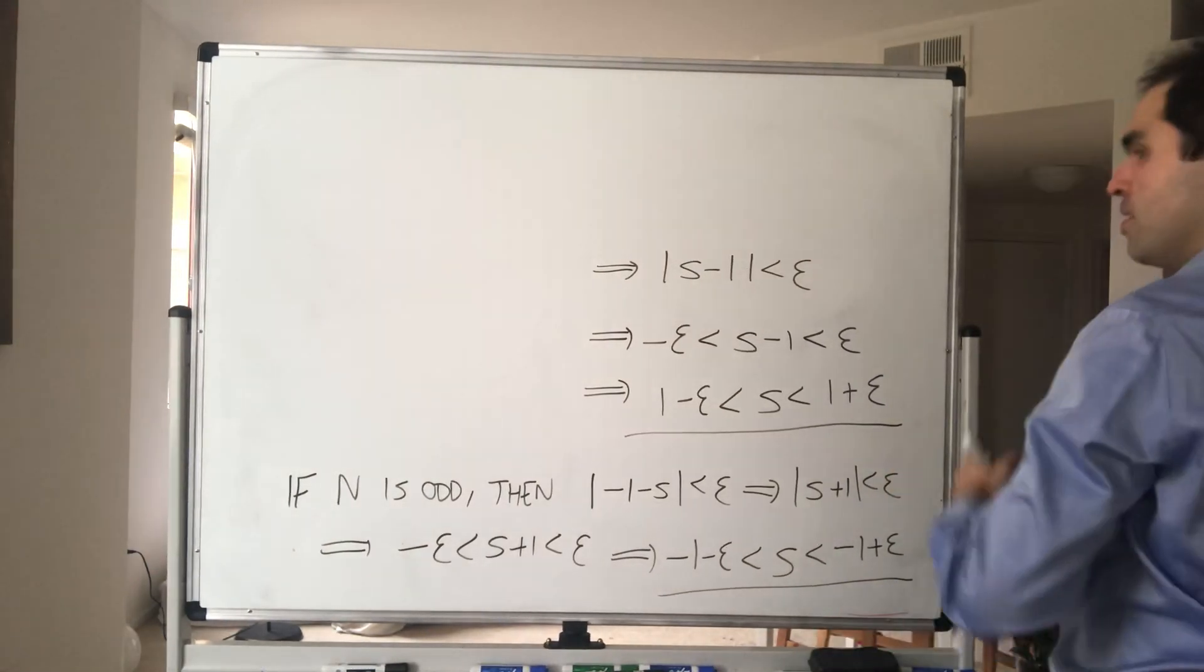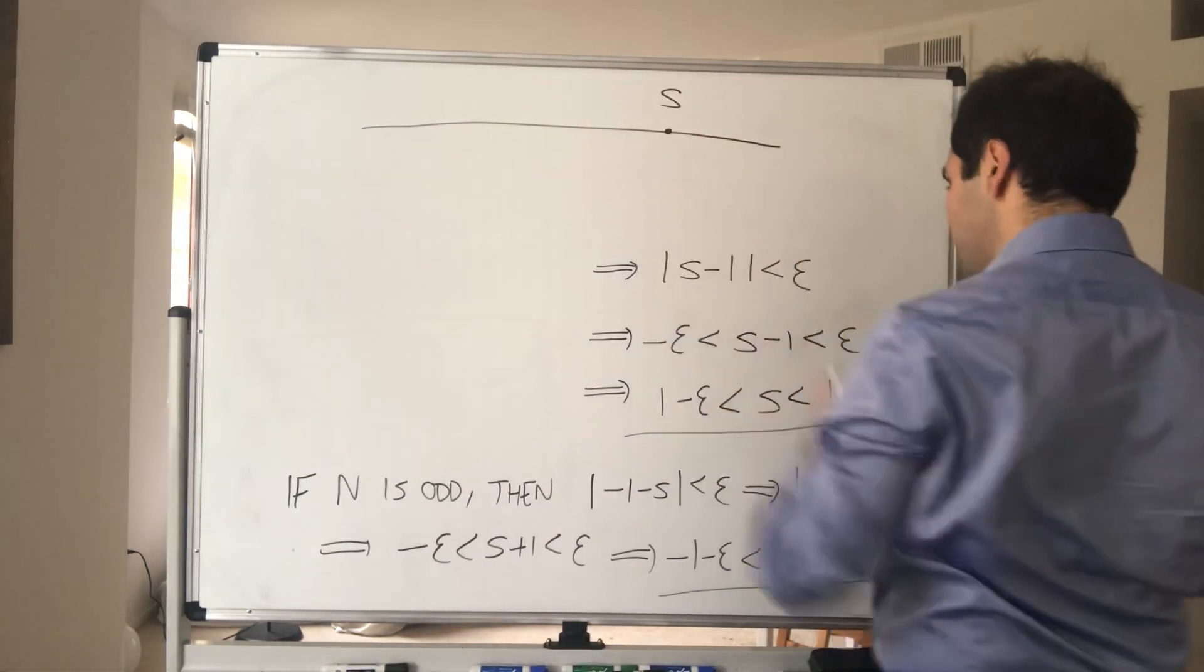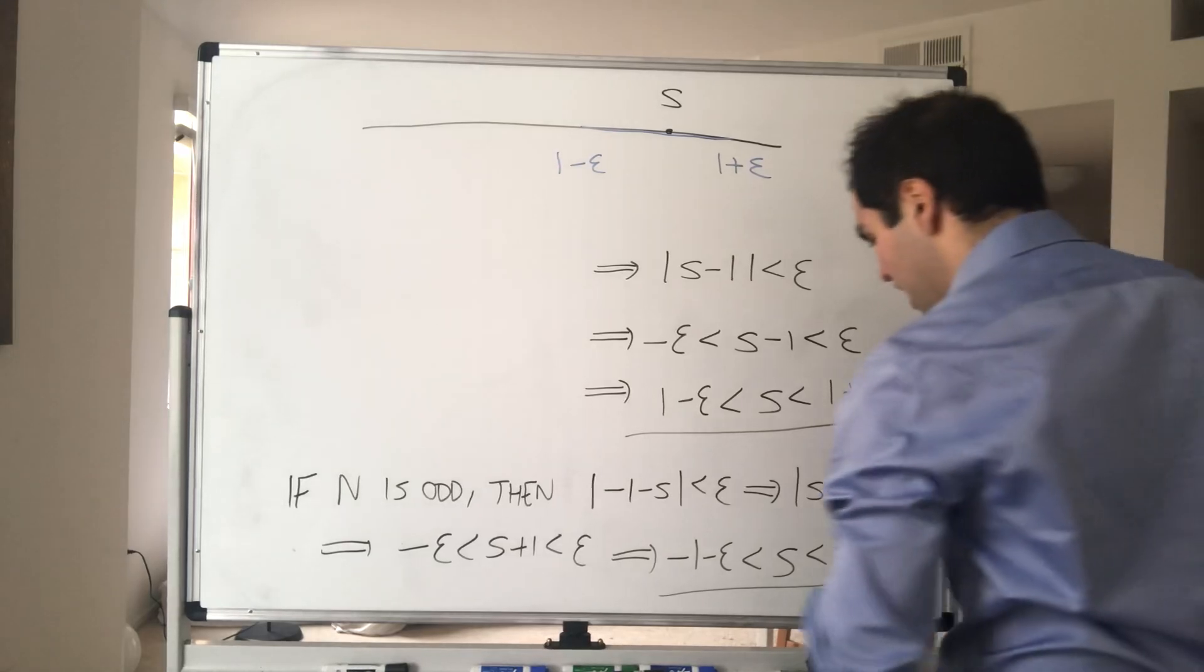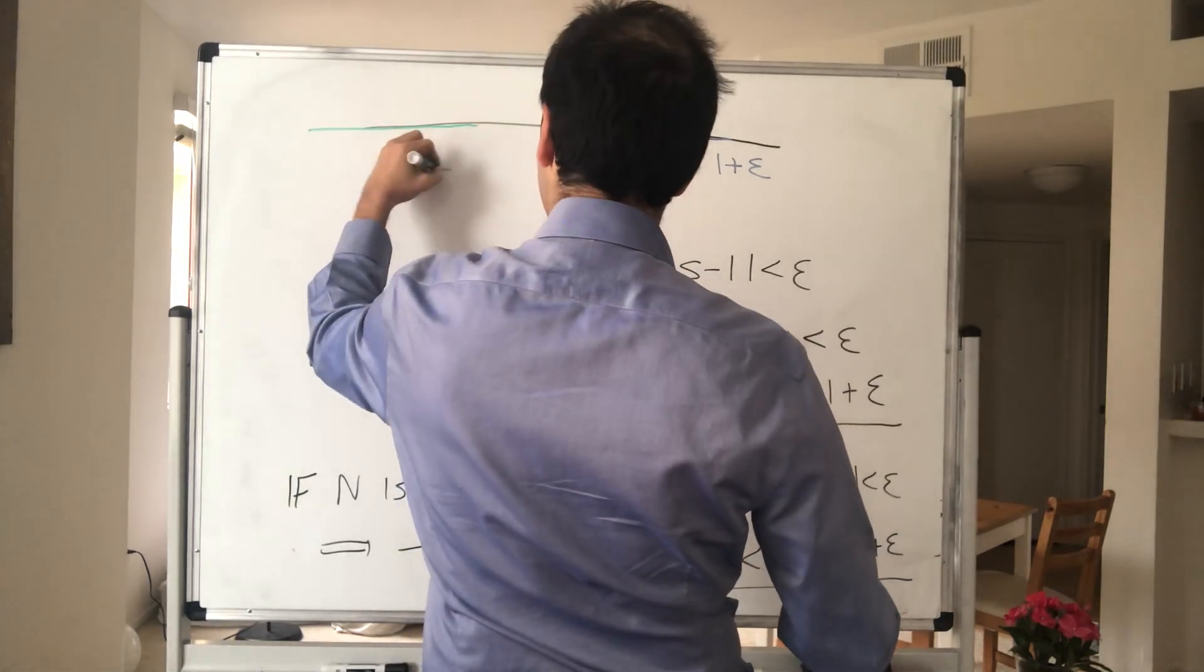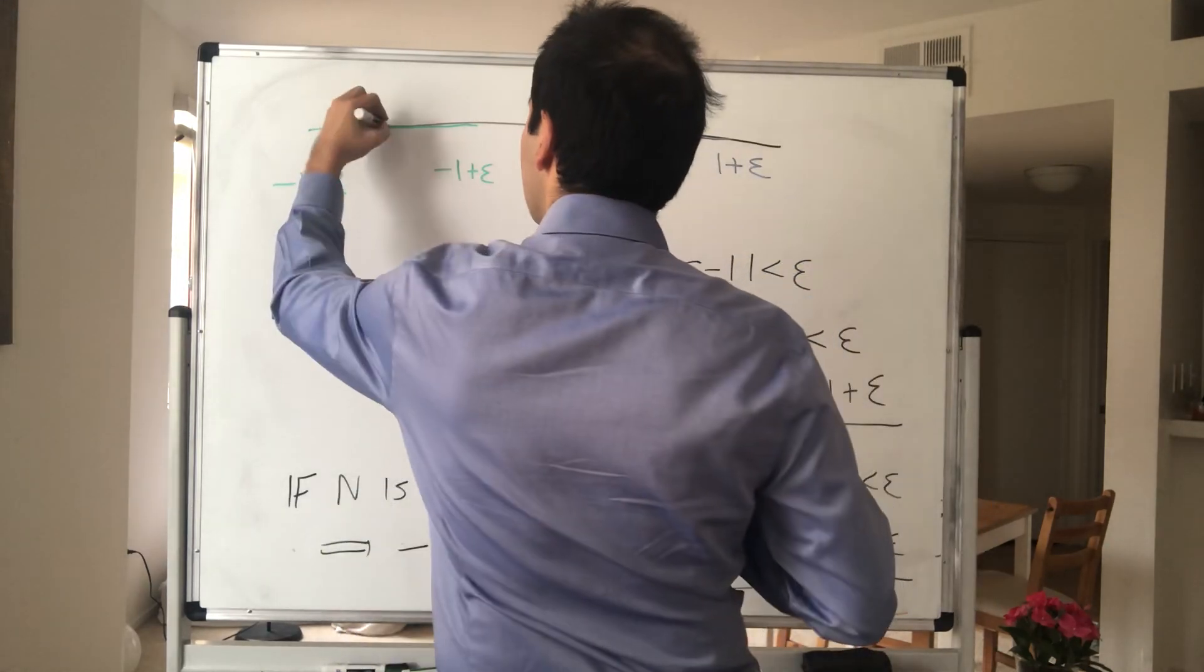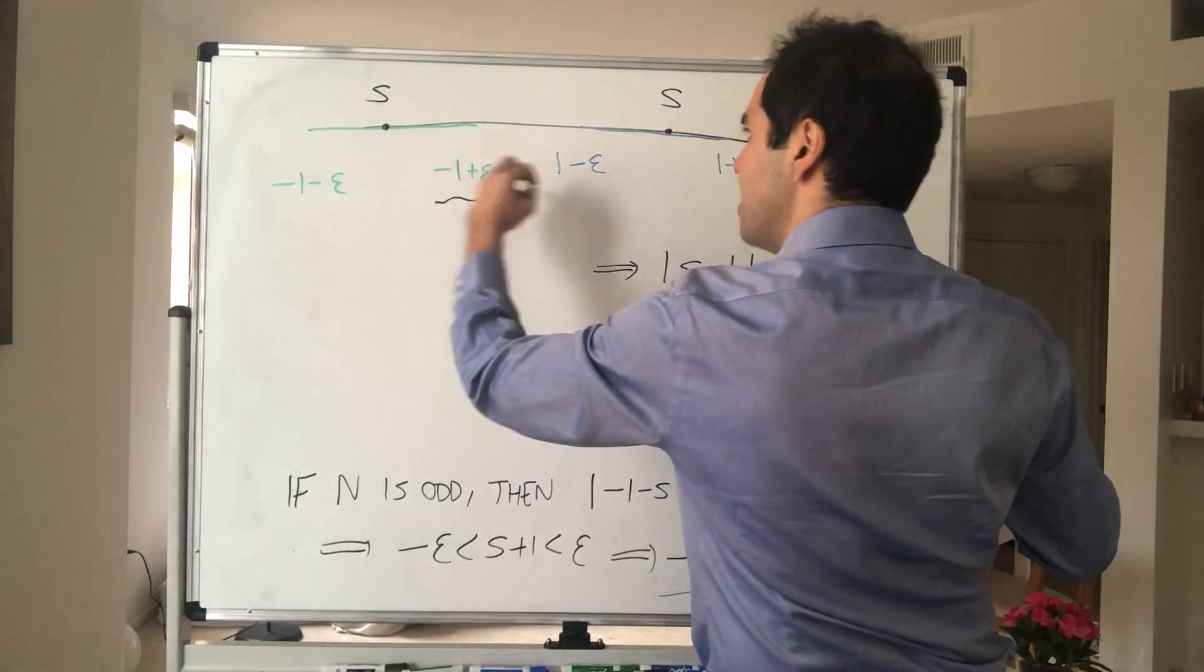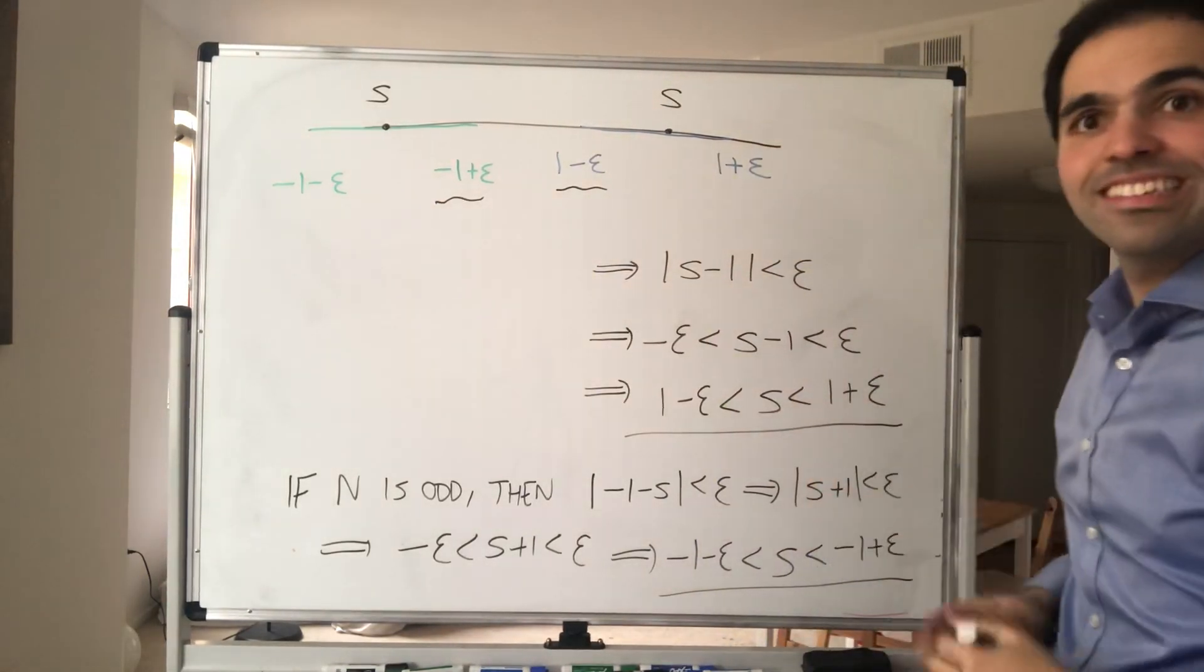Because again, what do we have? We have on the one hand, we know s is between 1 + epsilon and 1 - epsilon. This is 1 + epsilon, 1 - epsilon. And on the other hand, we have s is between -1 + epsilon and -1 - epsilon. And so all you need to do is choose epsilon so small such that this number is less than this number. Because then we simply get s is less than this is less than this is less than s, and that's our contradiction.